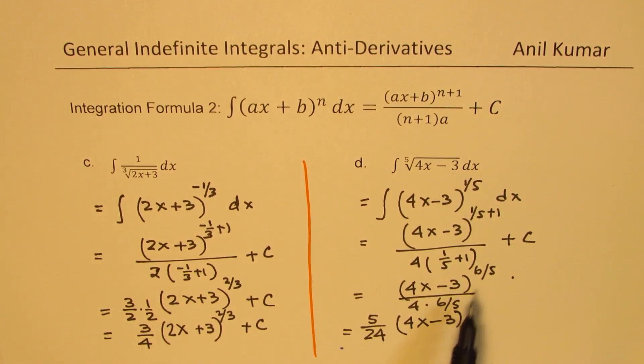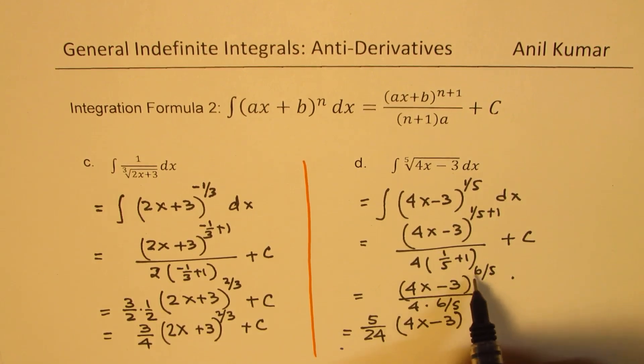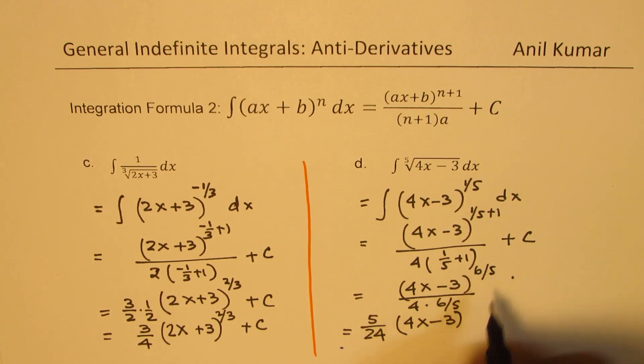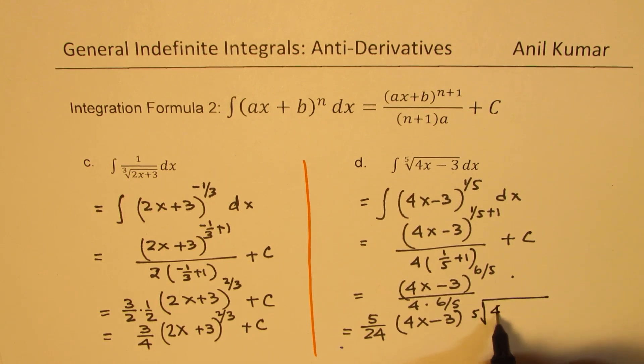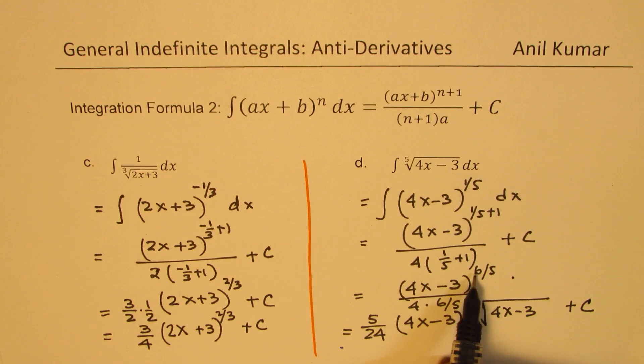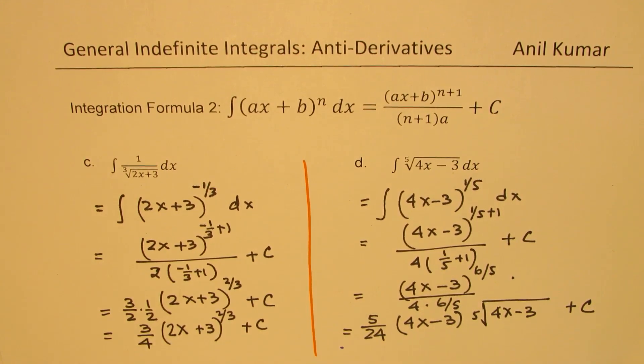This is like 4x minus 3, you could also write as times 5th root of 4x minus 3. This is 1 plus this, you could also write this as 5th root of 4x minus 3 plus a constant C, or you can leave it as to the power of 6 over 5, either way. I hope that helps.